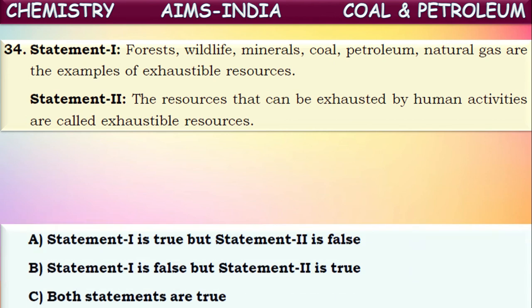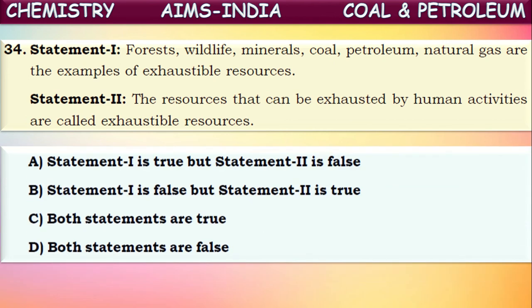Next statement question. Statement one: forest, wildlife, animals, minerals, coal, petroleum, and natural gas are examples of exhaustible natural resources. Yes — all these resources will be finished if continuously used, so they are correctly called exhaustible natural resources. Statement one is correct. Statement two: the resources that can be exhausted by human activities are called exhaustible resources. This is the same definition we discussed. Statement two is also true. Both are true — the correct answer is C.